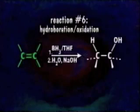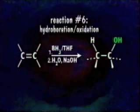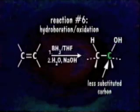When scientists want an alcohol with the hydroxyl group added in anti-Markovnikov fashion, they use alkene addition reaction number six: the hydroboration-oxidation reaction. In the hydroboration-oxidation reaction, an alkene is treated with borane, BH₃, to produce an alcohol where the OH group is attached to the less substituted carbon of the original alkene double bond.